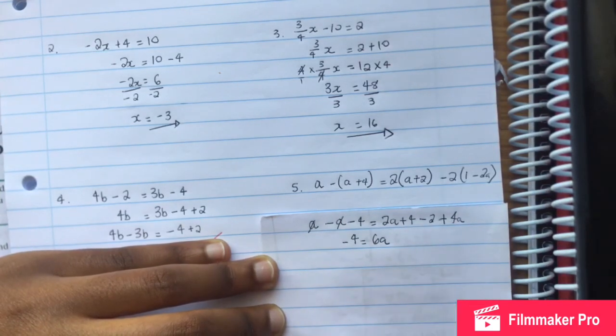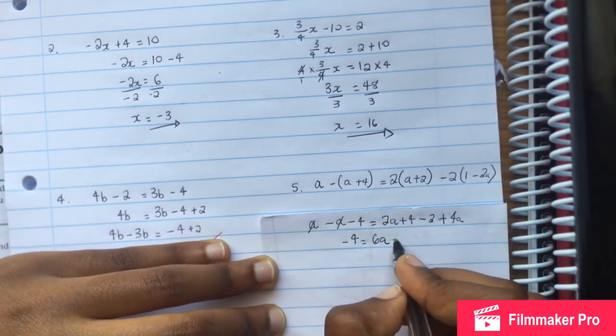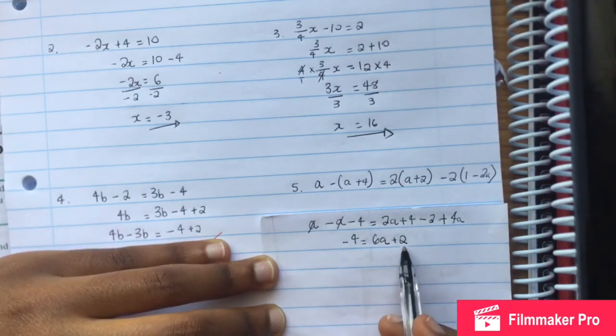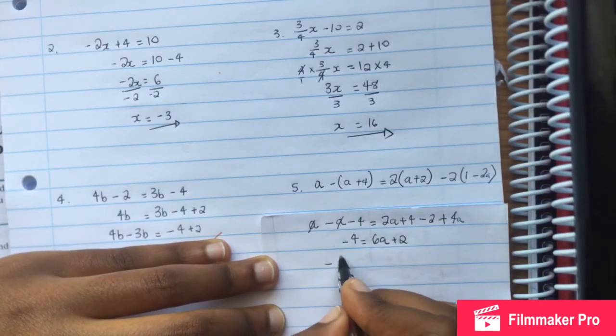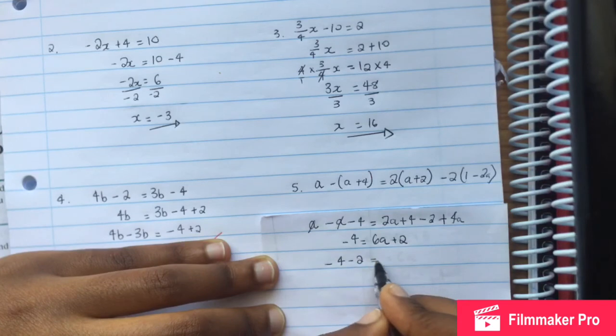We have negative a minus 4. 2a plus 4a is 6a. 4 minus 2 is 2, positive 2. The 2 will move to the other side and become negative. So negative 4 minus 2 is equal to 6a.